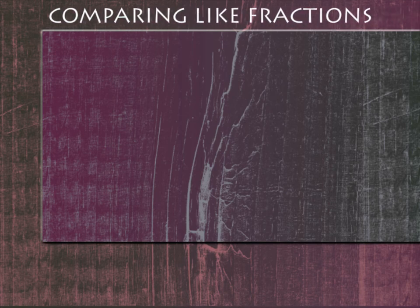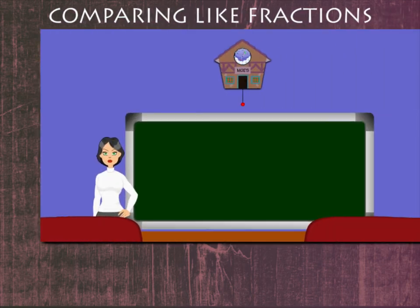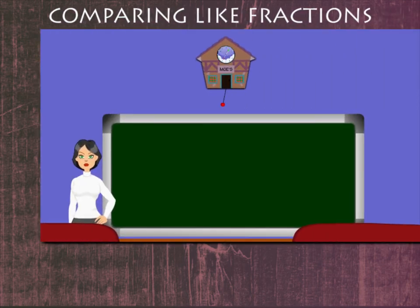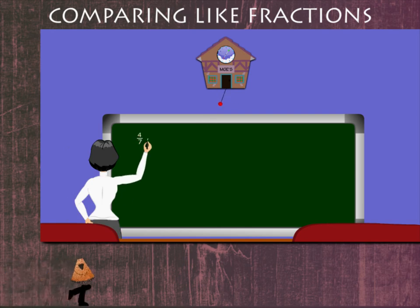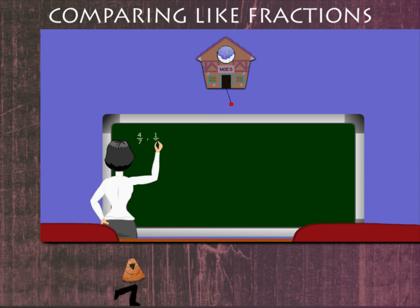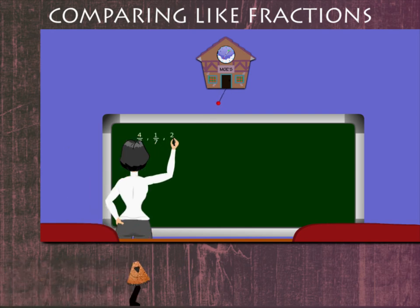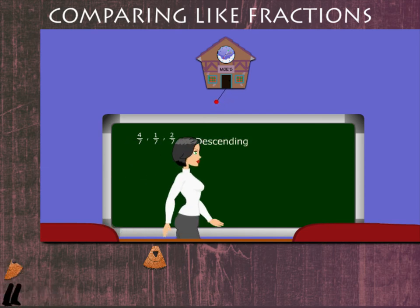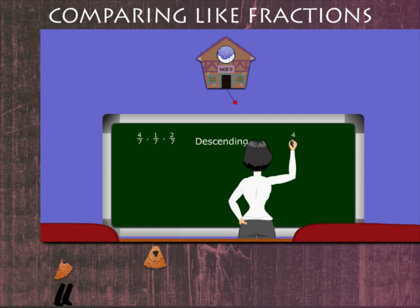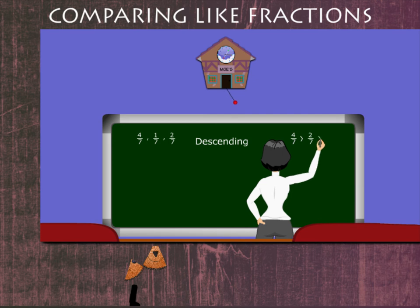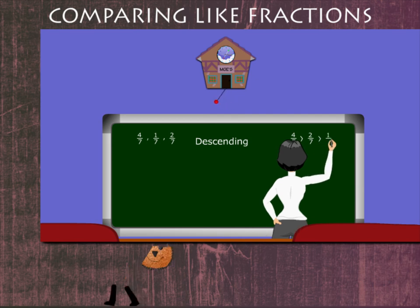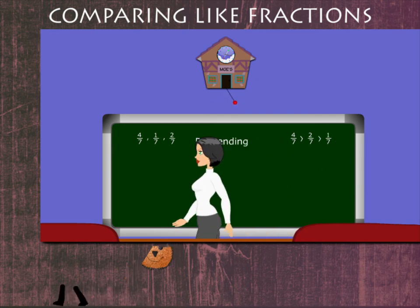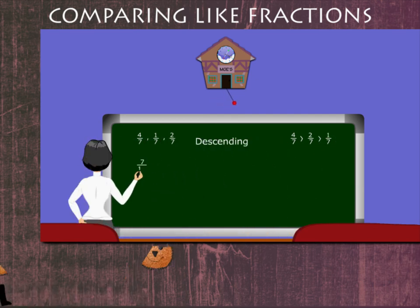Comparing Like Fractions. Teacher Lucy writes a set of like fractions — 4/7, 1/7, and 2/7 — and arranges them in descending order. 4/7 is greater than 2/7, which is greater than 1/7.